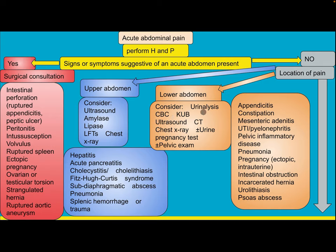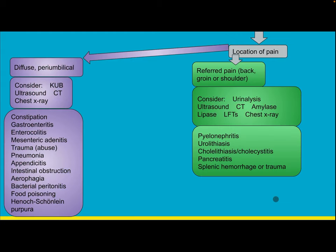For lower abdominal pain, consider urine analysis, CBC, KUB, ultrasound, CT, chest X-ray, with or without urine pregnancy test and pelvic exam. Differential diagnosis includes appendicitis, constipation, mesenteric adenitis, UTI, pyelonephritis, pelvic inflammatory disease, pneumonia, pregnancy (ectopic or intrauterine), intestinal obstruction, incarcerated hernia, urolithiasis, and psoas abscess.